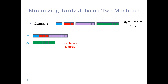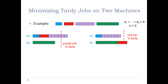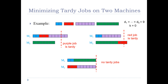In that schedule, the purple job is tardy because it completes after the due date of nine. Another possible schedule assigns the blue and purple jobs to one machine and the green and red jobs to the other, where the red job is tardy. Finally, a schedule where the blue and green go on one machine and the red and purple on the other results in all jobs completing before the due date of nine — no jobs are tardy.